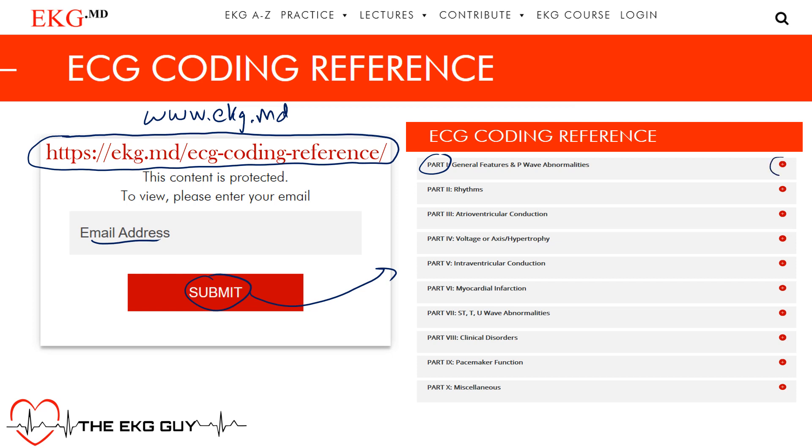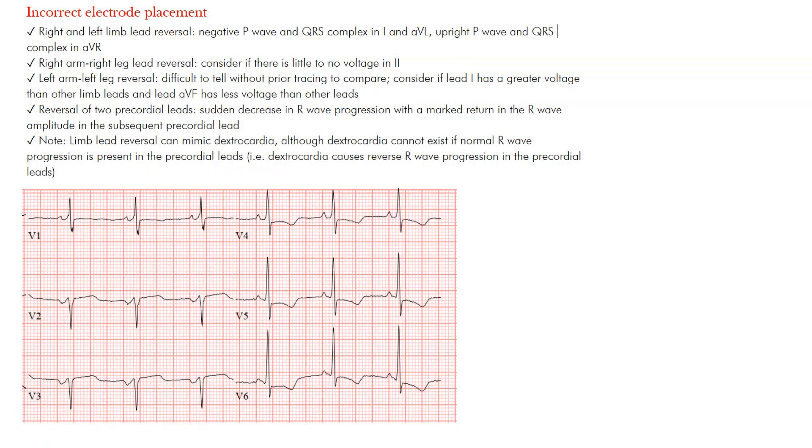So once you get access, click on this dropdown and go to incorrect electrode placement, about the third one down, and then we'll get started. So here we have incorrect electrode placement. Now there's a few things I want you to realize. First of all, we don't have examples of all these here, so we'll go through them.